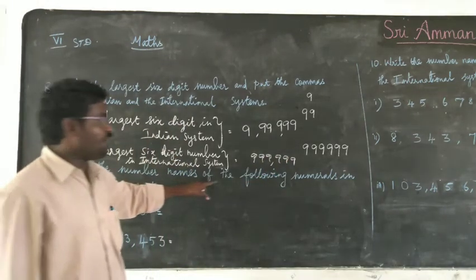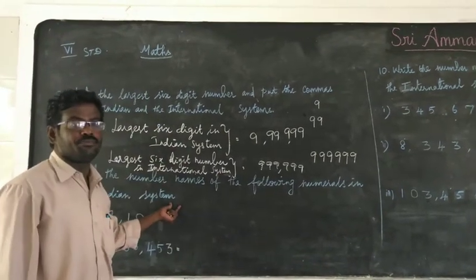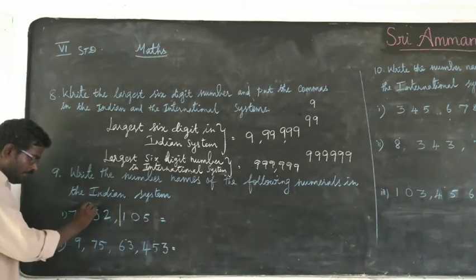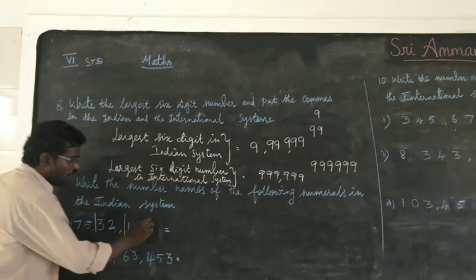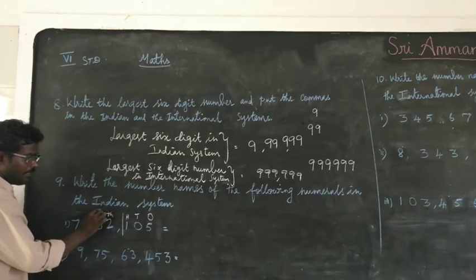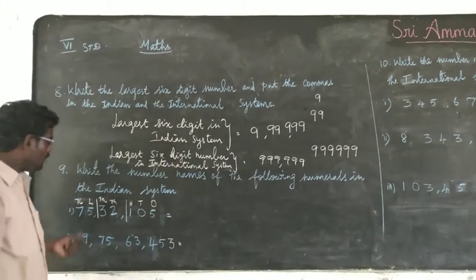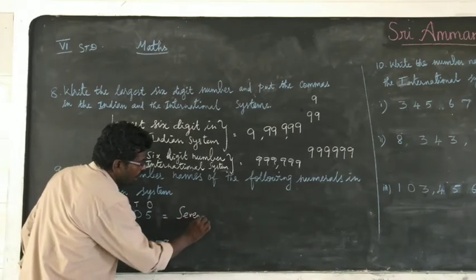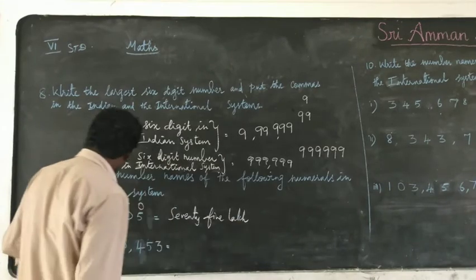Next question: write the number name of the given numerals in Indian system. In Indian system, first write the place value chart — ones, tens, hundreds, thousands, ten thousands, lakhs, ten lakhs. The last place is 75, so that is 75 lakhs.